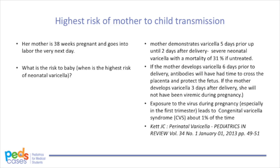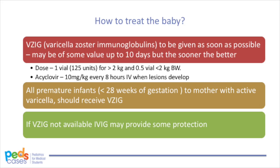First trimester exposure to varicella can cause congenital varicella syndrome, consisting of cicatricial scarring, limb defects, microcephaly, and/or corneal retinitis. For perinatal varicella, babies at high risk should receive VZIG as soon as possible after birth — at least within 72 to 96 hours — at a dose of one vial (125 units) if the baby is more than 2 kg, or half a vial if less than 2 kg. They should also be treated with IV acyclovir at 10 mg/kg every 8 hours when lesions develop. Some experts would treat with acyclovir right from birth. IVIG can be used if VZIG is not available.